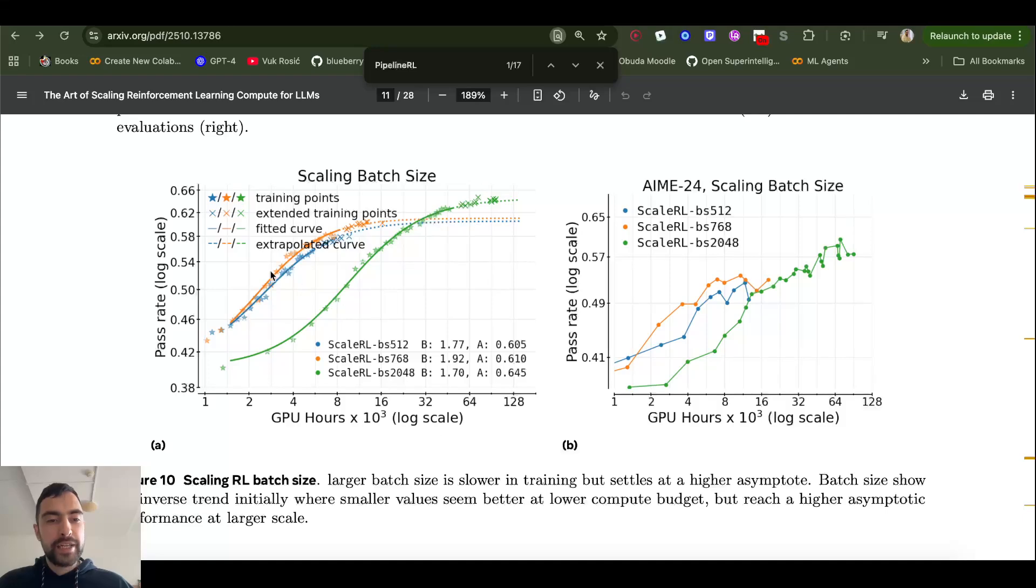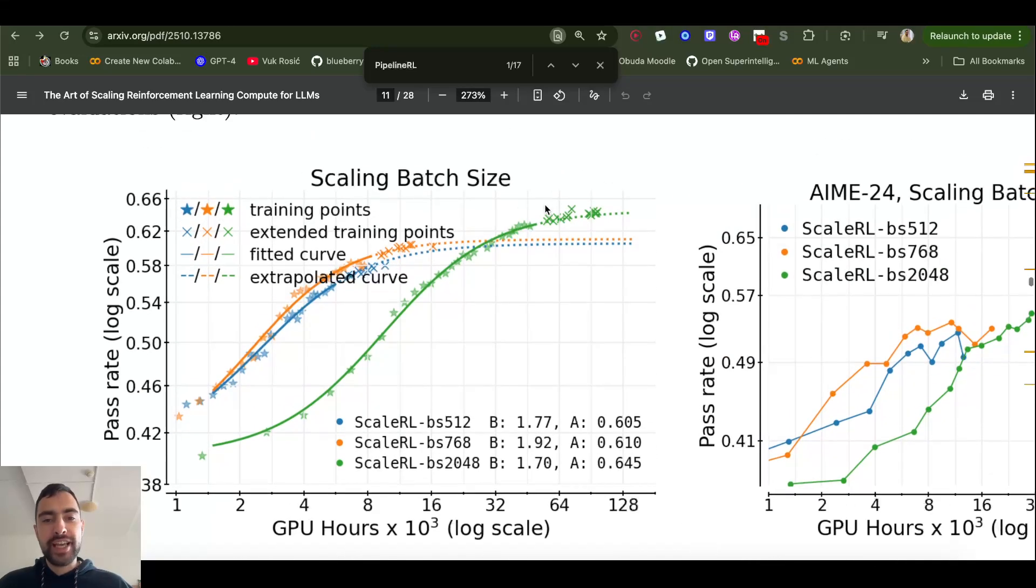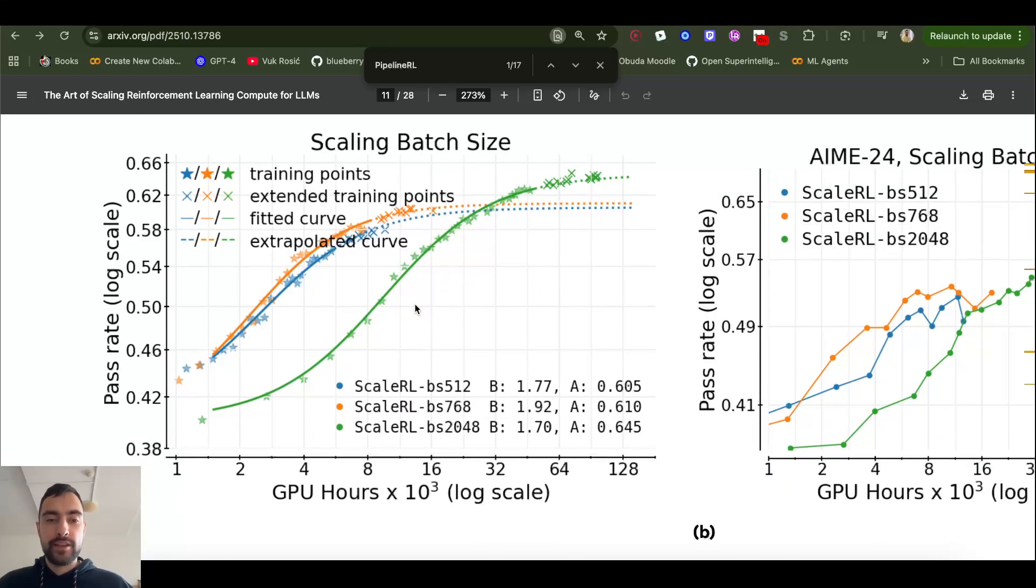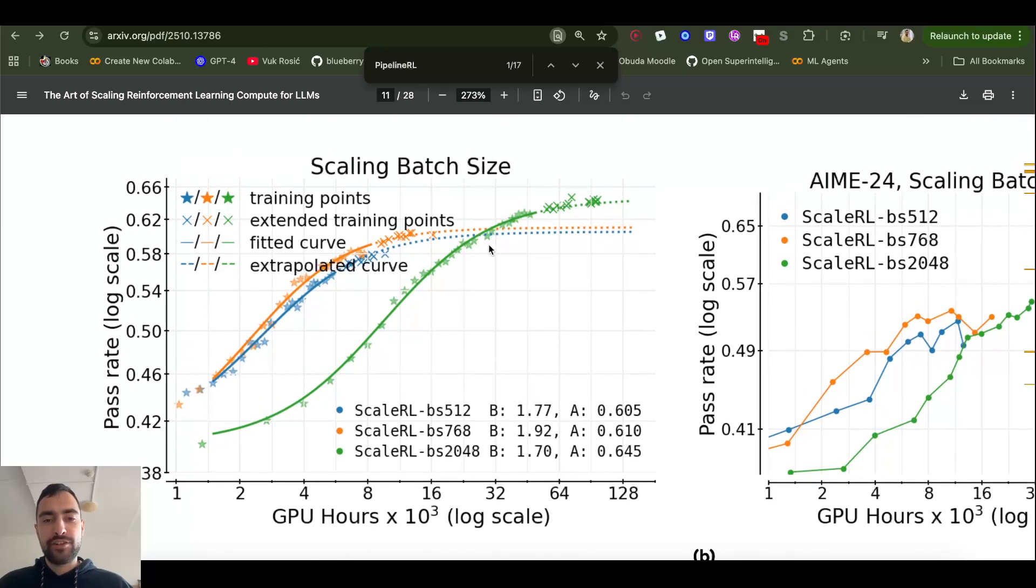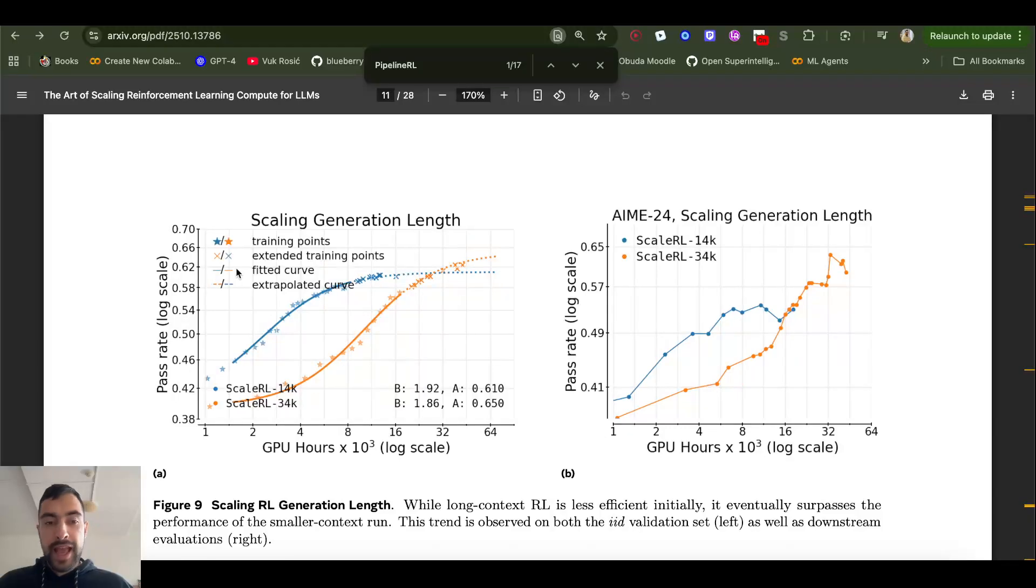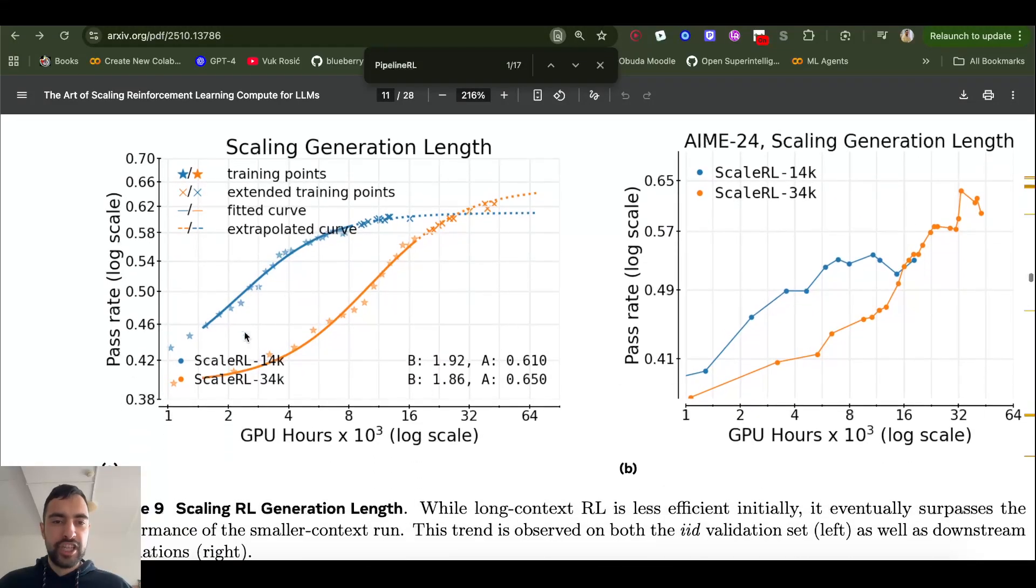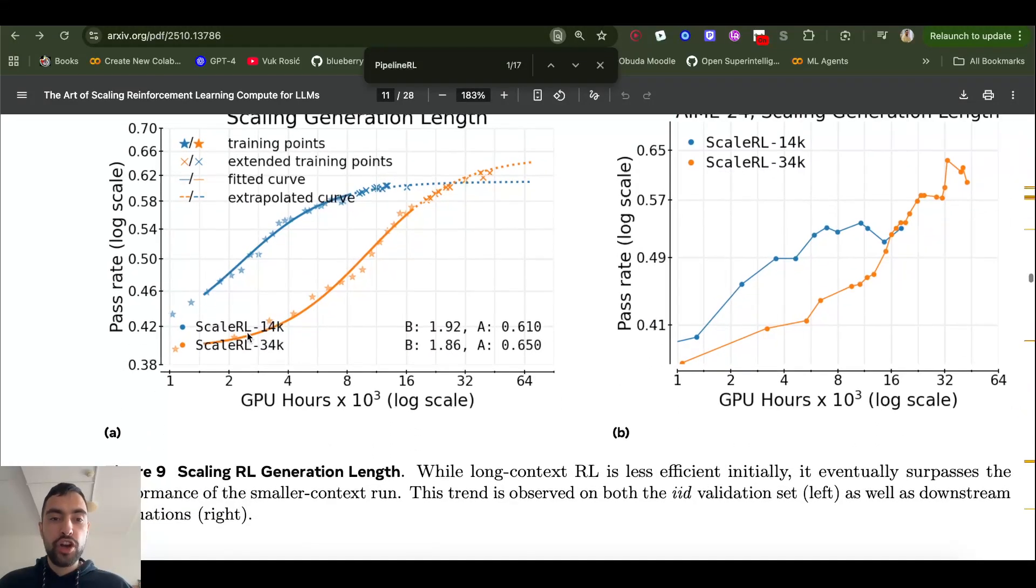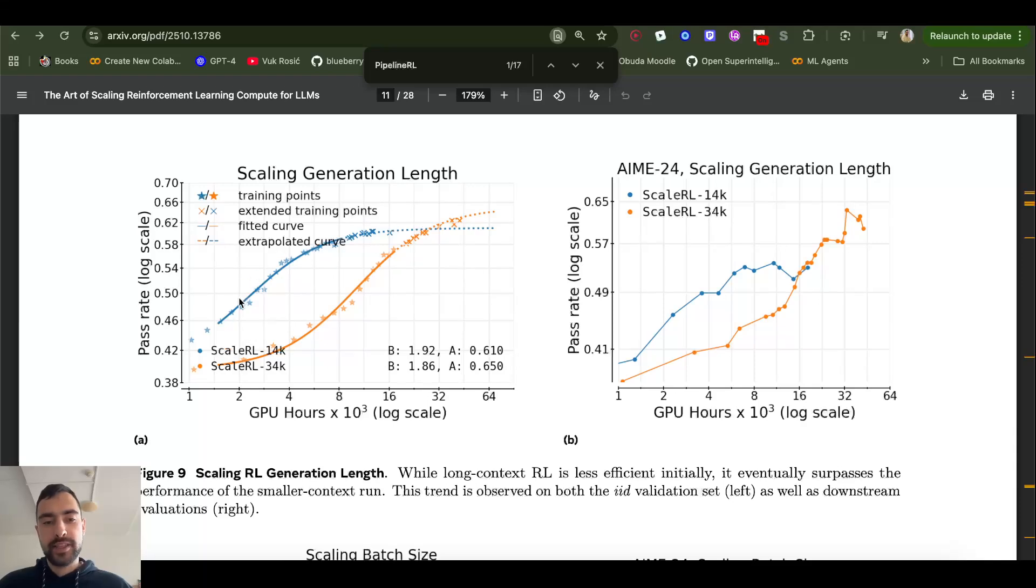And then also higher batch size will reach higher asymptote here. So you see, you have very large batch size and it starts off learning slowly. So you would presume that it's worse than smaller batch sizes, but eventually it's going to overtake smaller batch sizes. And same goes for generation length. So longer context initially starts off worse, but eventually surpasses and achieves better reasoning with longer context. This just goes to scale, follows the scaling laws, batch size, context length, bigger is better.